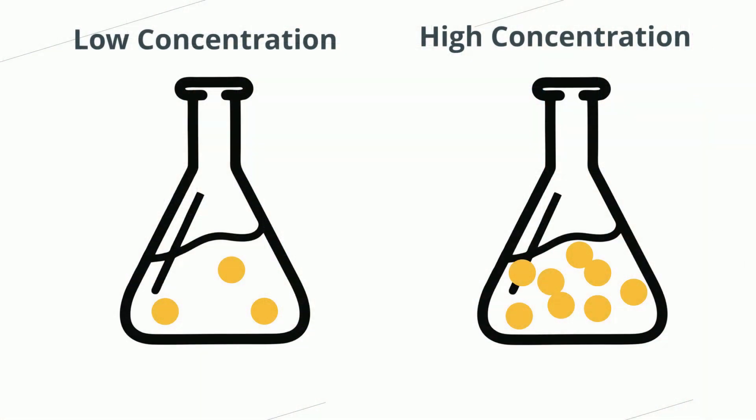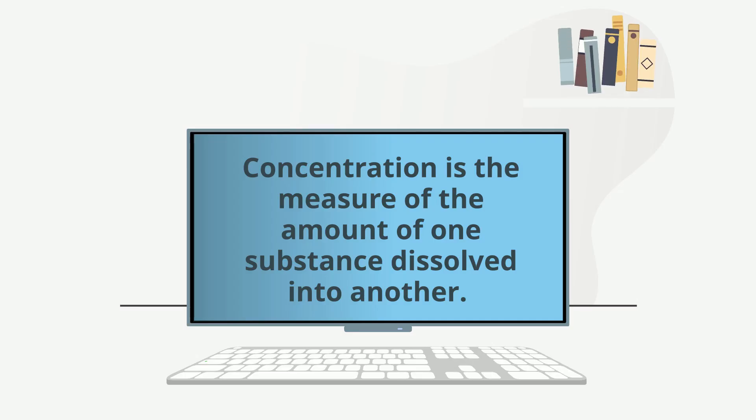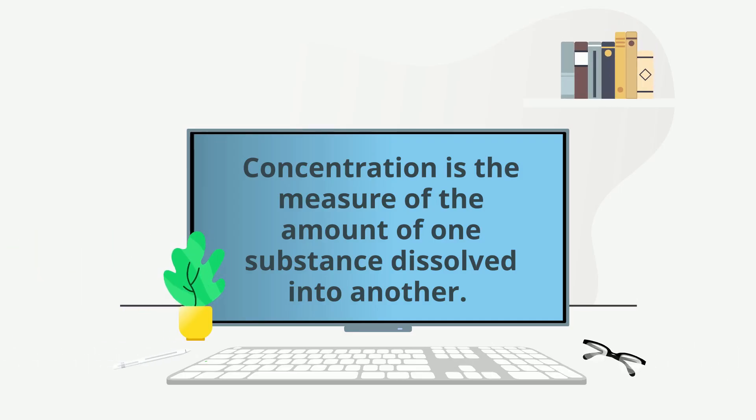Concentration. In general, a higher concentration of reactants will cause a faster rate of reaction. Concentration is the measure of the amount of one substance dissolved into another. When concentration is high, the particles are close to each other, which increases how often the reactants collide and react more quickly.